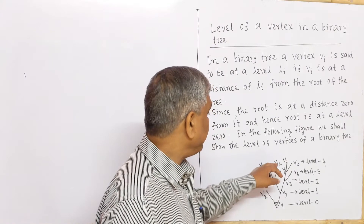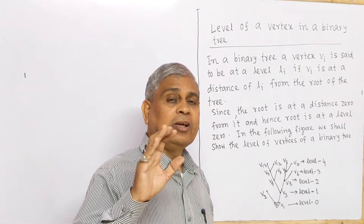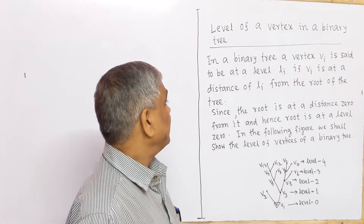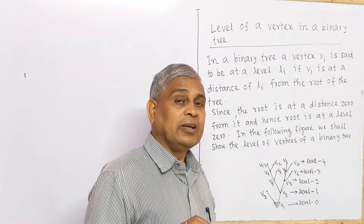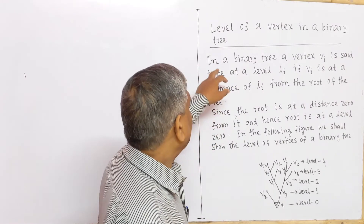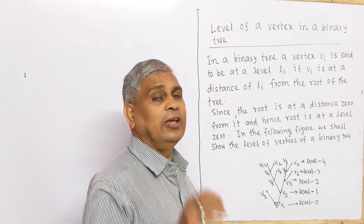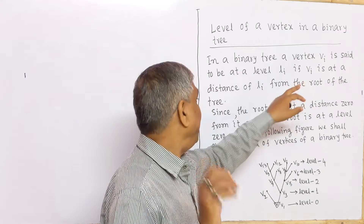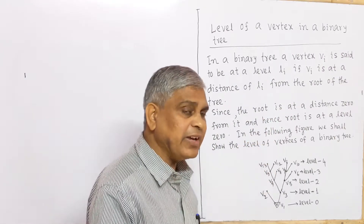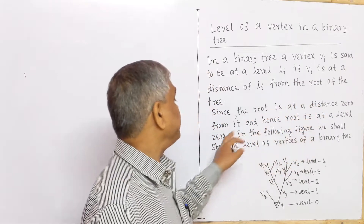Similarly, V13, V12, V11, V10 are of level 4 — they are at distance 4 from the root. Root is vertex V1. So we define: the level of a vertex is the distance of that vertex from the root. In a binary tree, a vertex Vi is said to be at level Li if Vi is at a distance of Li from the root of the tree. Since the root is at a distance 0 from itself, the root is at level 0.